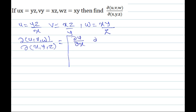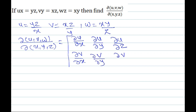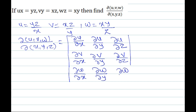First row: partial differentiation of u with respect to x, partial differentiation of u with respect to y, partial differentiation of u with respect to z. Second row: partial differentiation of v with respect to x, y, z. Third row: partial differentiation of w with respect to x, partial differentiation of w with respect to y, partial differentiation of w with respect to z.